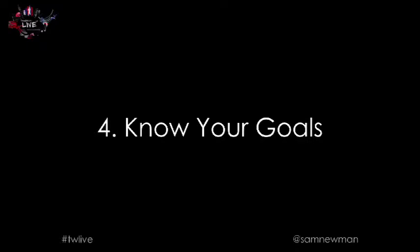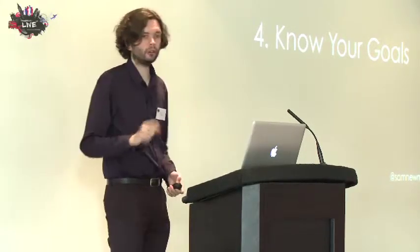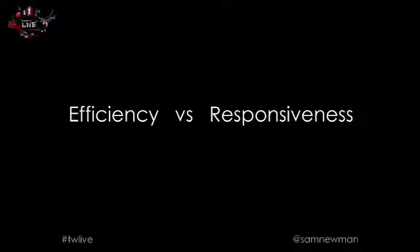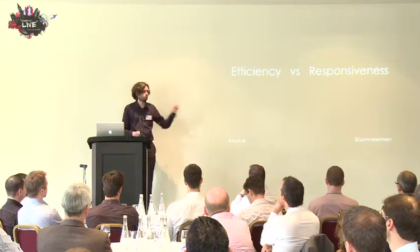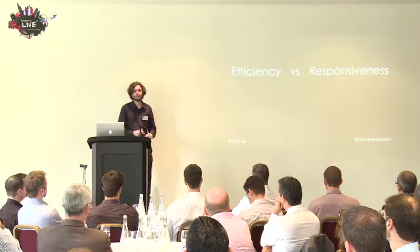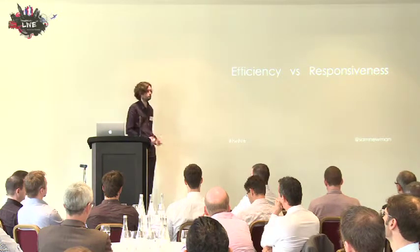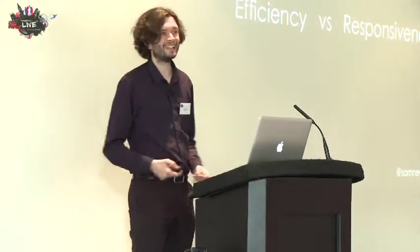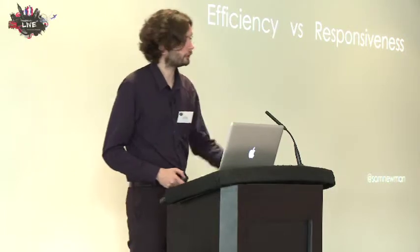Know your goals — at the macro level. How is this product or service line going to achieve success? Jim talked last year about adaptive leadership and the comparison between organizations that achieve success through efficiency — doing what everyone else does, just way better, like Walmart — versus responsiveness: organizations that succeed by innovating, coming up with new ideas and getting those ideas out quickly to understand how successful they are.